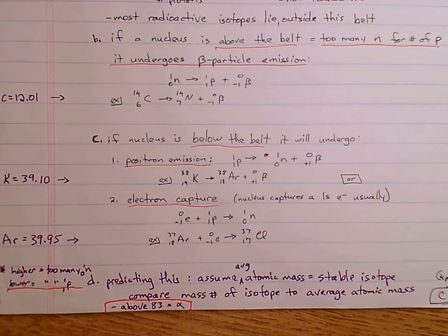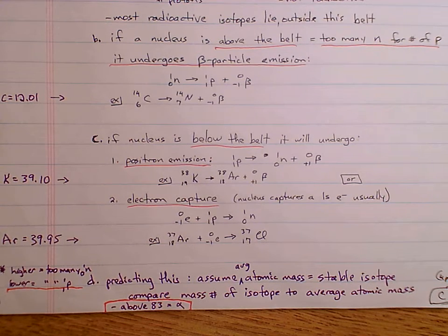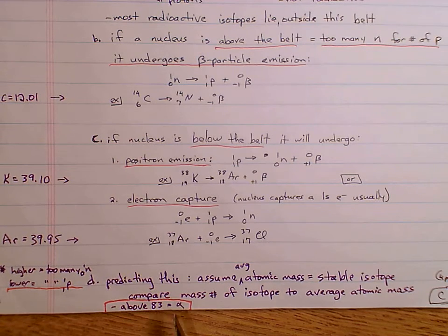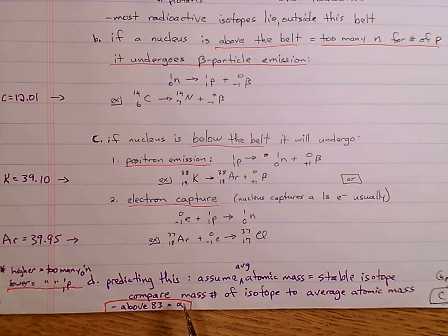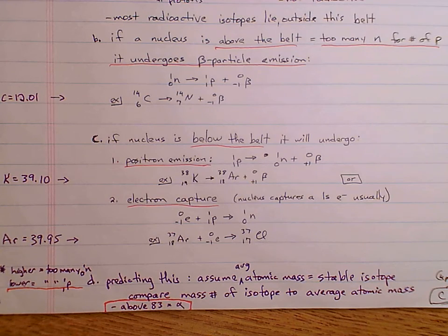Also, if you're above atomic number 83, we know that none of those isotopes are stable. These tend to go via alpha emission. If you are above atomic number 83, you have too much mass — too many protons and too many neutrons — and alpha emission gets rid of two protons and two neutrons. It doesn't always do alpha emission; sometimes it does beta emission, but alpha emission tends to be more common.